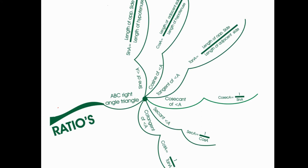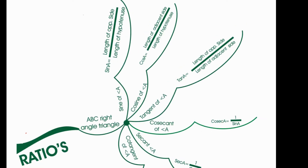Let us see our second branch: trigonometric ratios. In a right angle triangle, we have six ratios: sine of angle A, cosine of angle A, tangent of angle A, cosecant of angle A, secant of angle A, and cotangent of angle A.